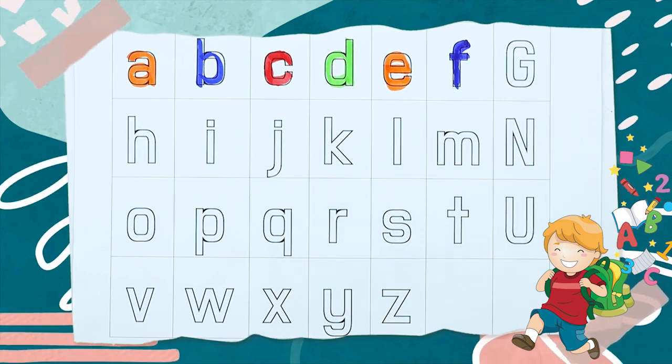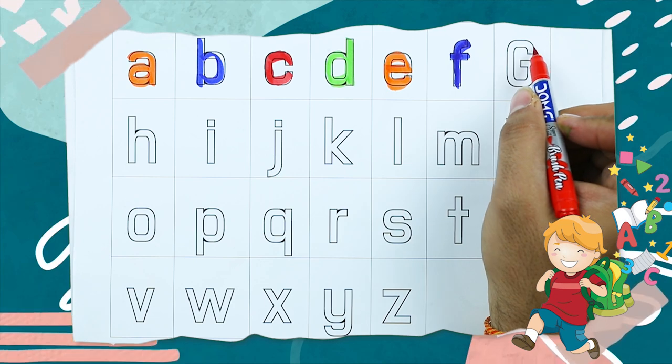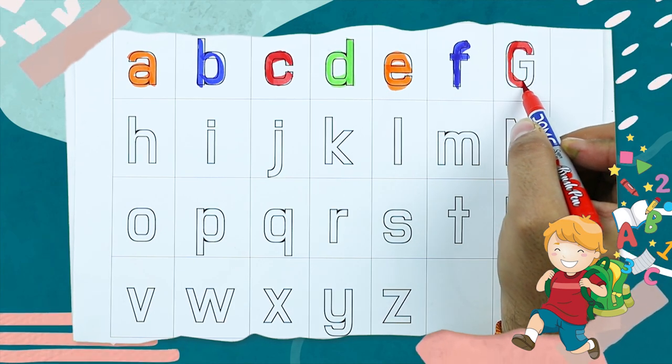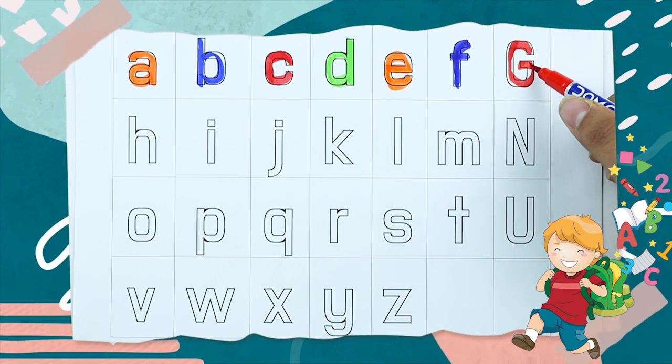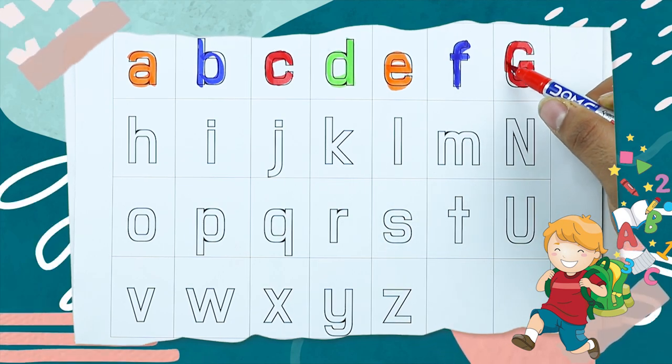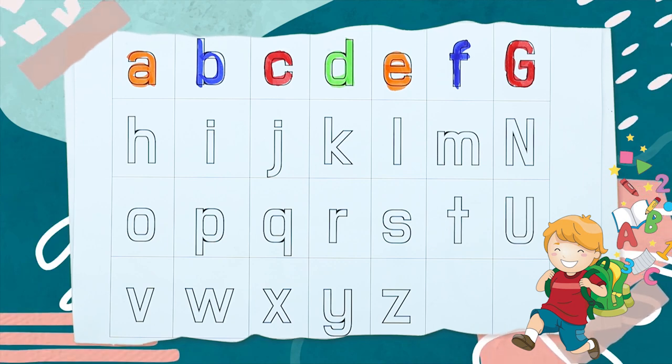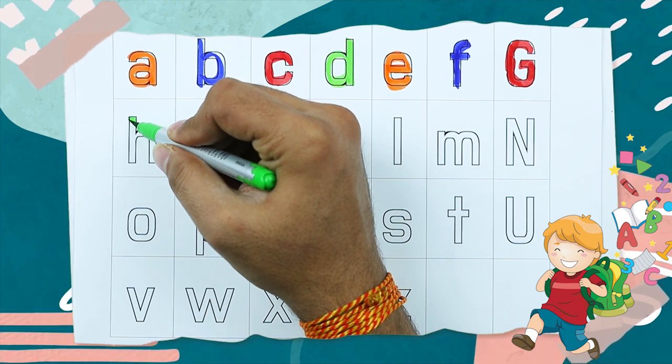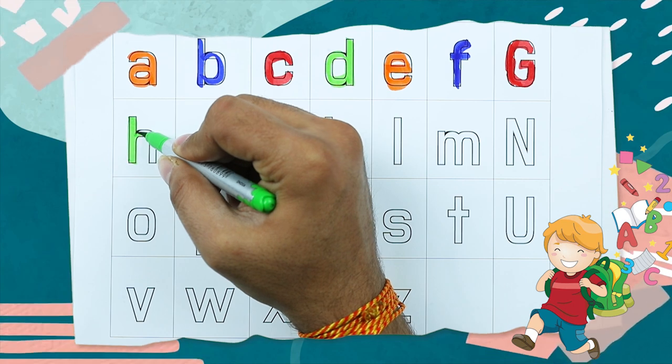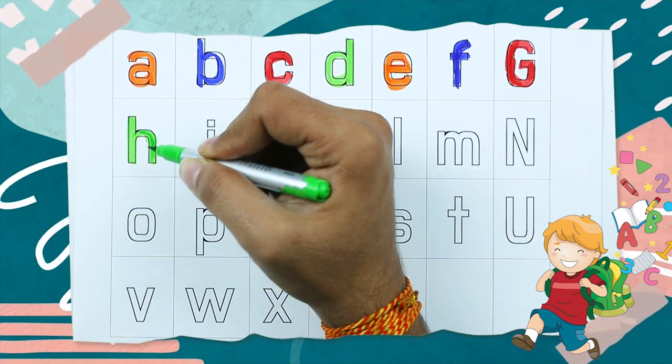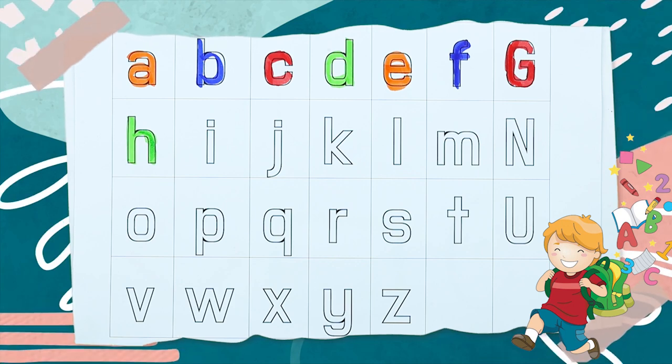G, G for got, it's G, G for got. H, H for hen, it's H, H for hen.